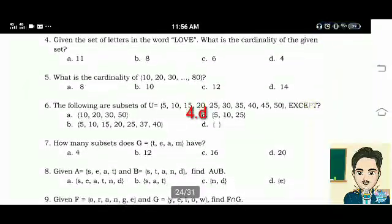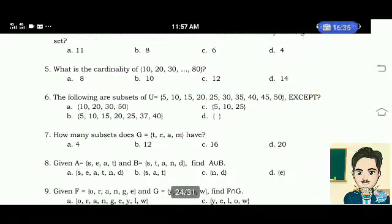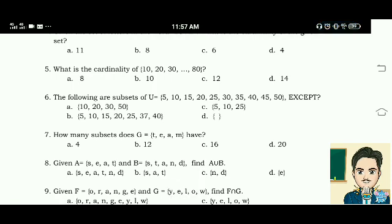Number 5. What is the cardinality of 10, 20, 30, ellipsis 80? The correct answer is letter A, 8.